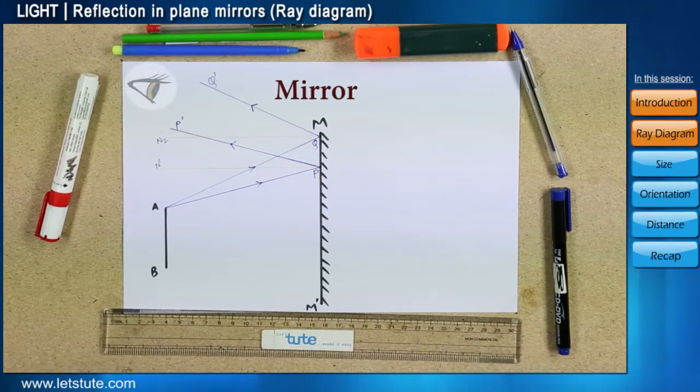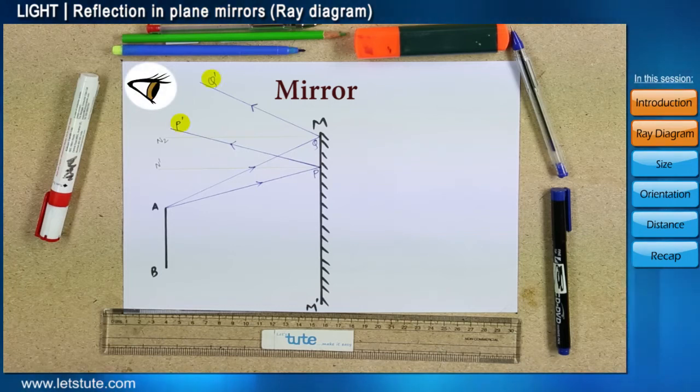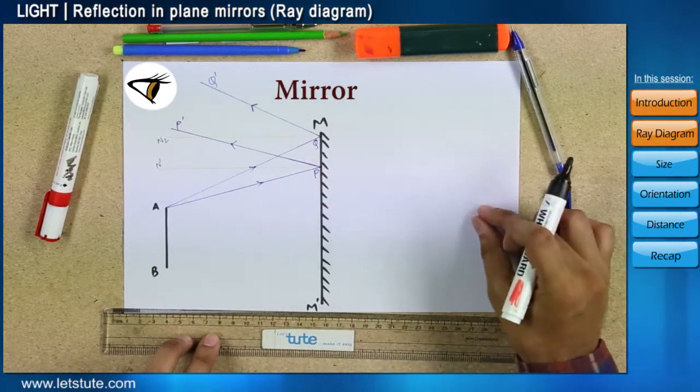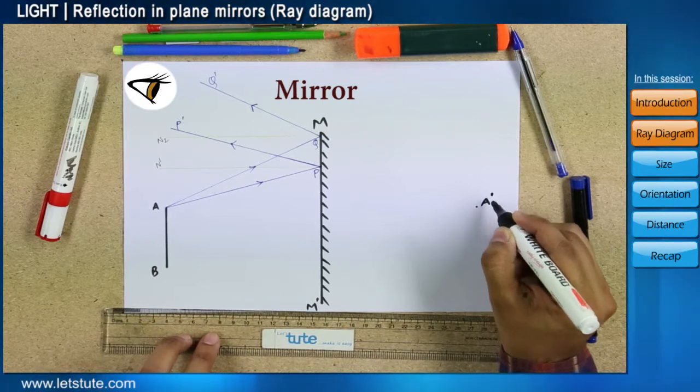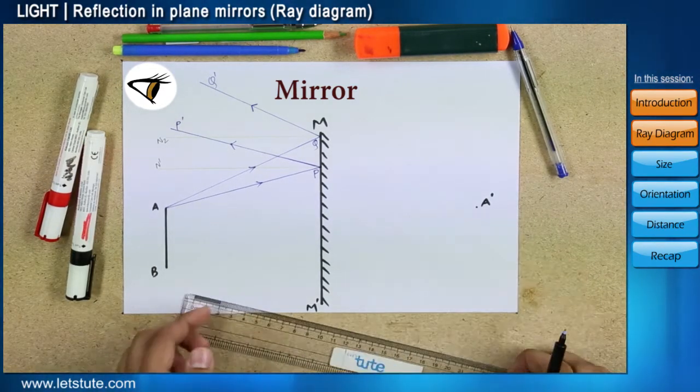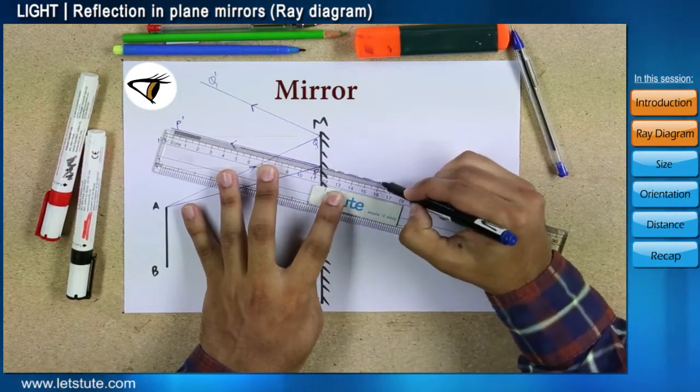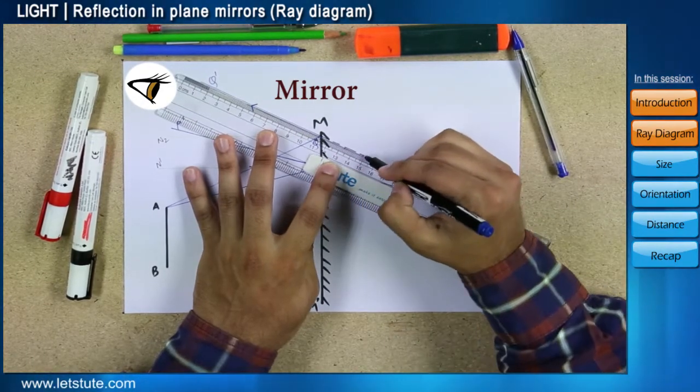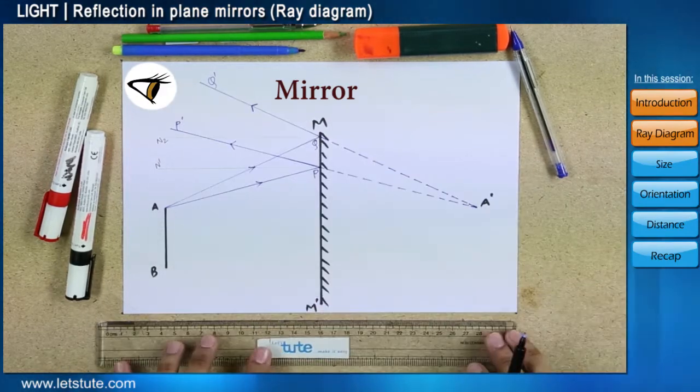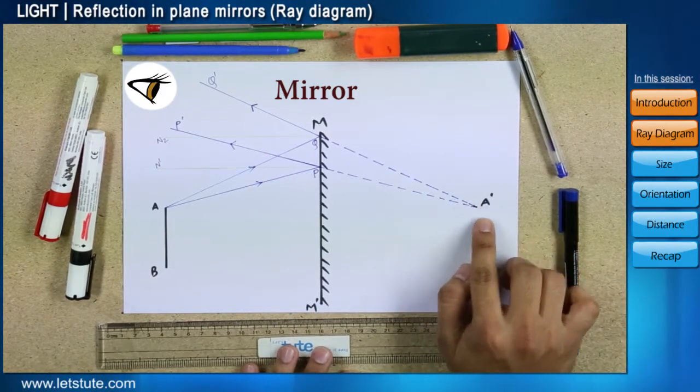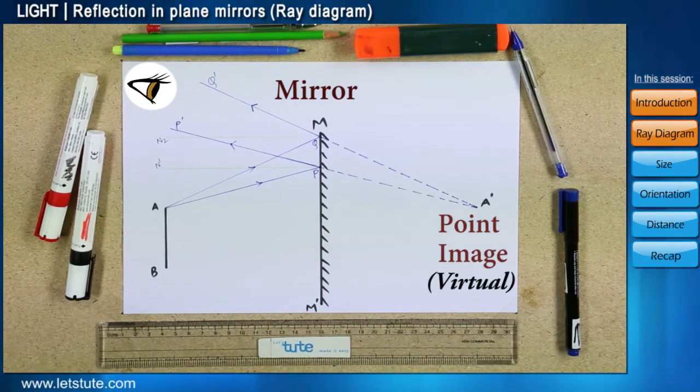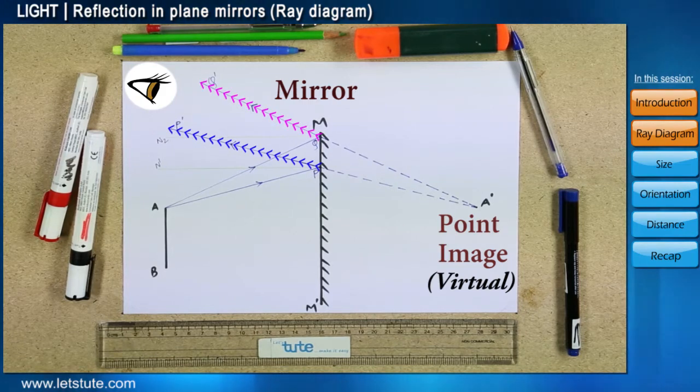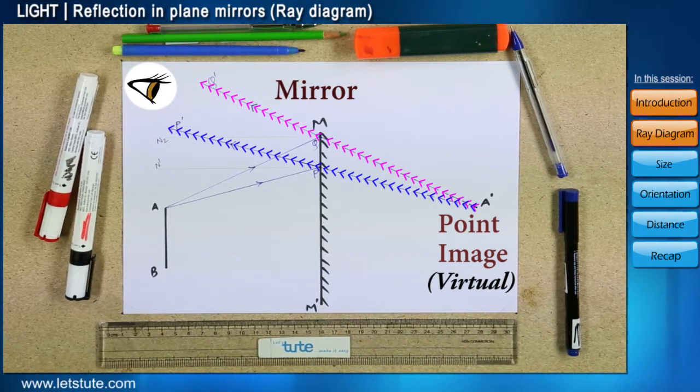Now, when we place our eyes between P dash and Q dash, or rather when we look at the mirror, the image appears to come from a point behind the mirror. Let's call this point A dash. The point A dash can only be formed once the reflected rays P, P dash and Q, Q dash are produced backwards and meet behind the mirror. As A dash is just a point, it is referred to as a point image. The point A dash is virtual as these rays do not actually meet but appear to come from point A dash when produced backward.